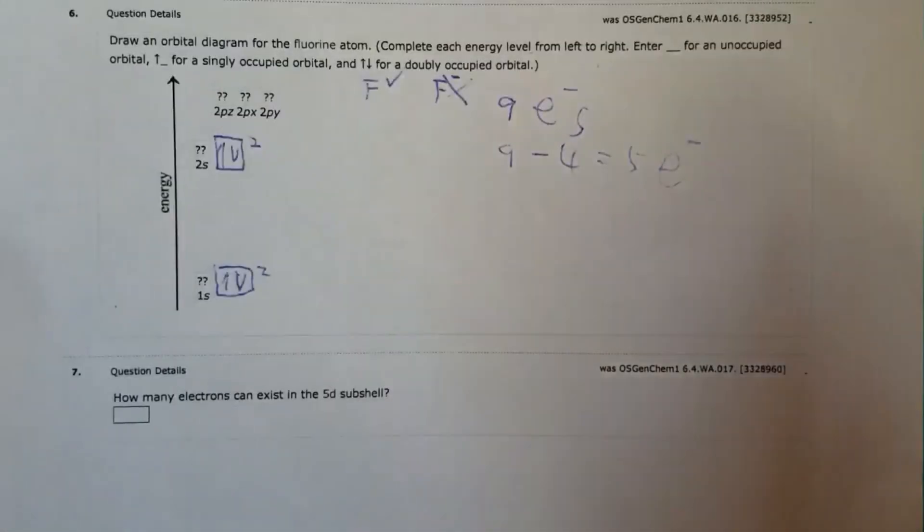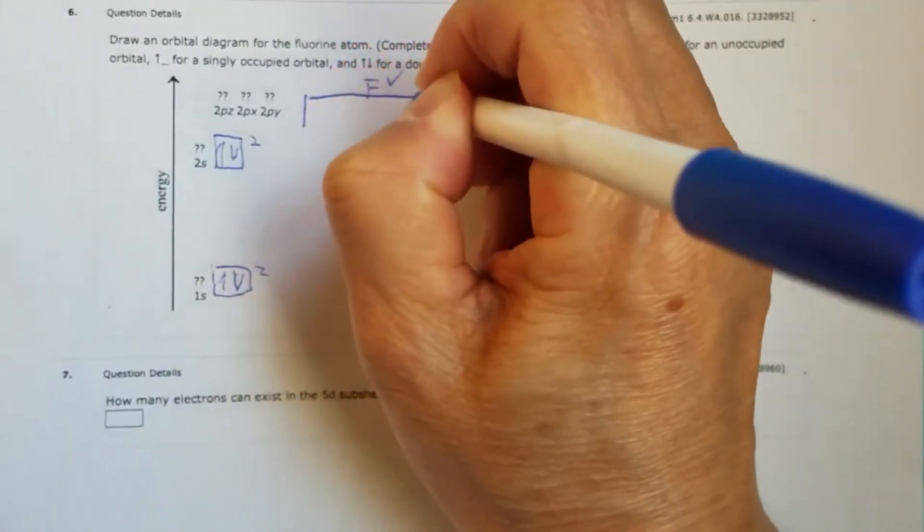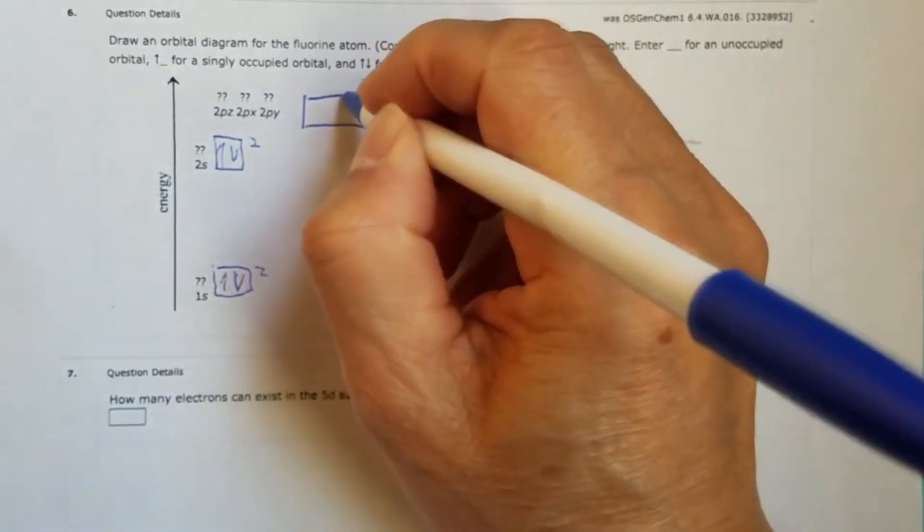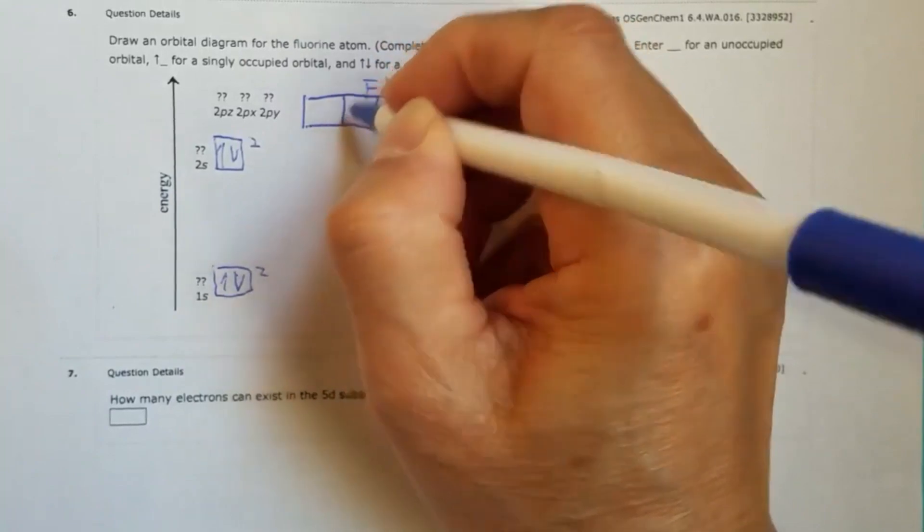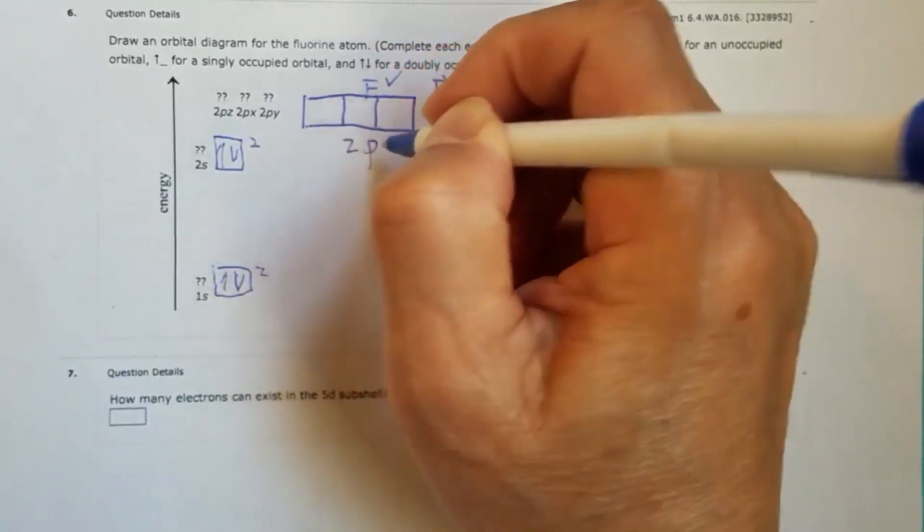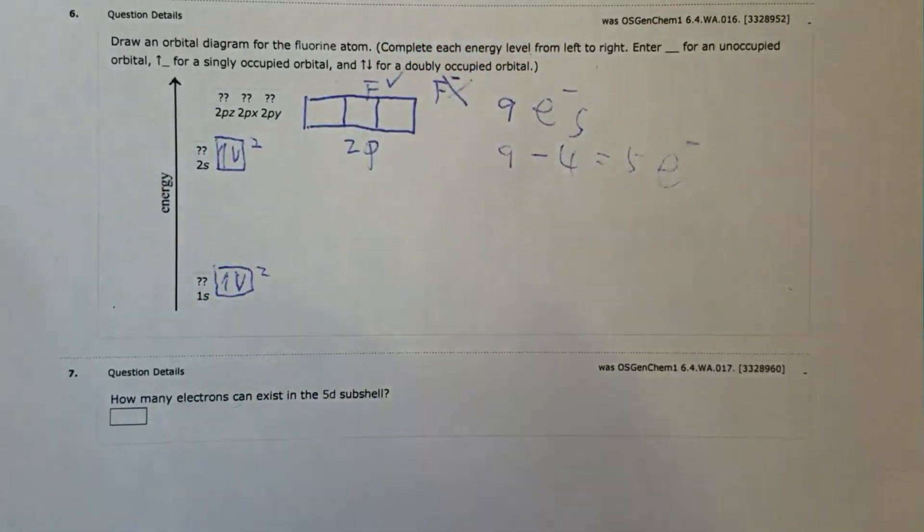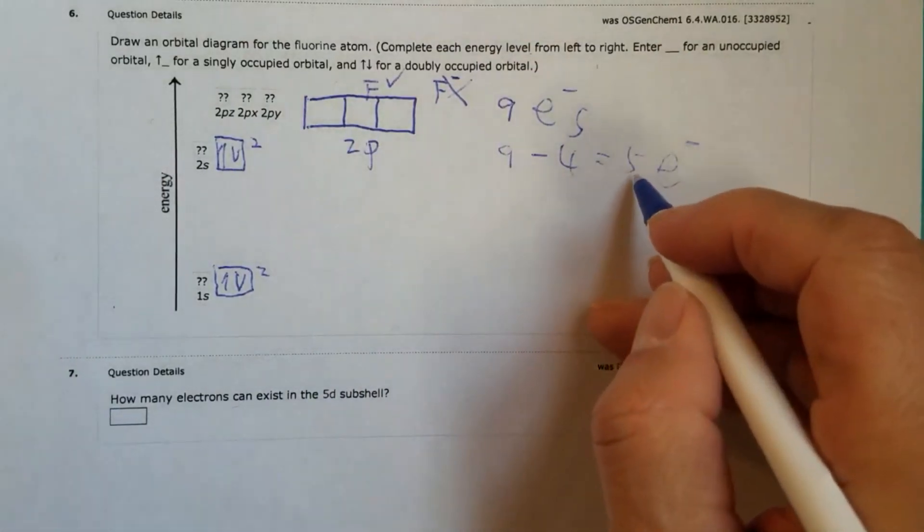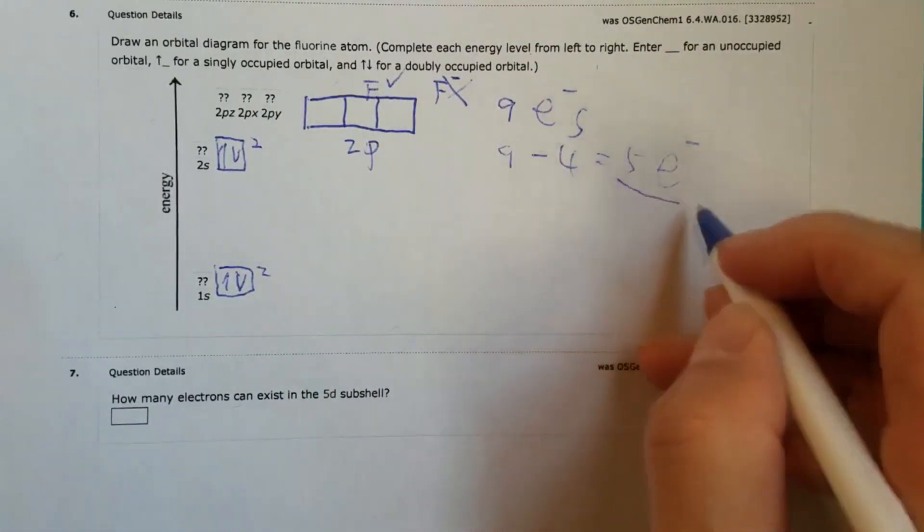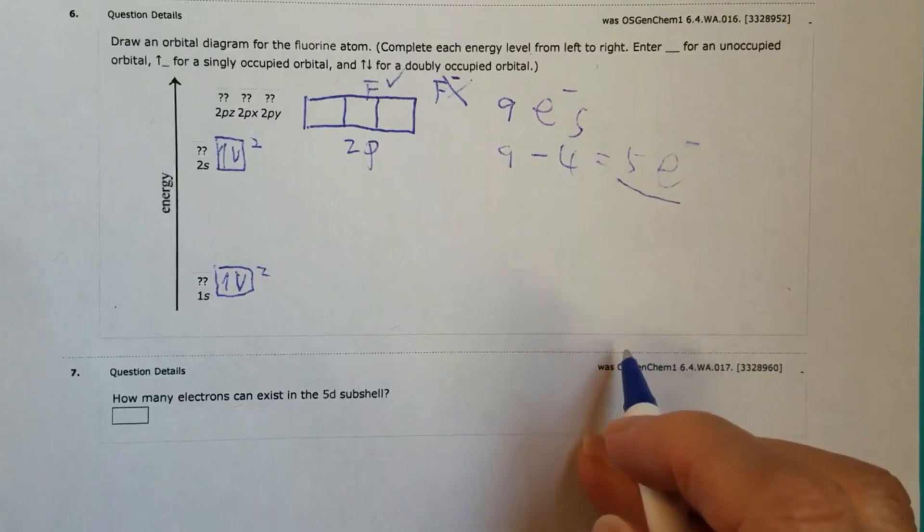All right, so let me draw the three 2p orbitals. Okay, so that's 2p. Okay, so we still have five remaining electrons to be assigned.